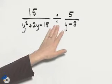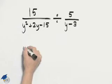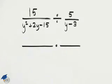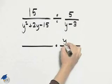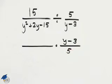The indicated operation in this problem is division, so when we divide fractions we need to rewrite the problem as a multiplication problem. We will multiply by the reciprocal of the second fraction, so we will multiply by y minus 3 over 5.